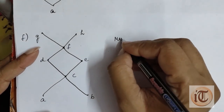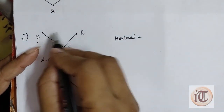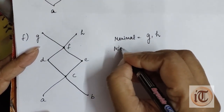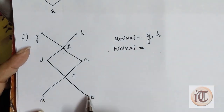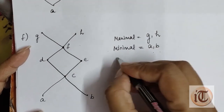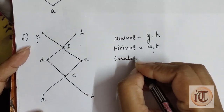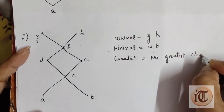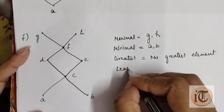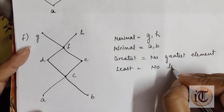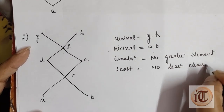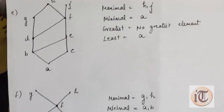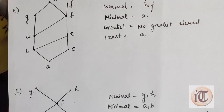For the next given Hasse diagram, the maximal elements are the top elements g and h. The minimal elements are the bottom elements a and b. For greatest, there is no greatest element because there is no unique element in the maximum case. Similarly, there is no least element because we do not have any unique element in the minimum case. I hope you understood all these examples for finding maximal, minimal, greatest, and least elements.